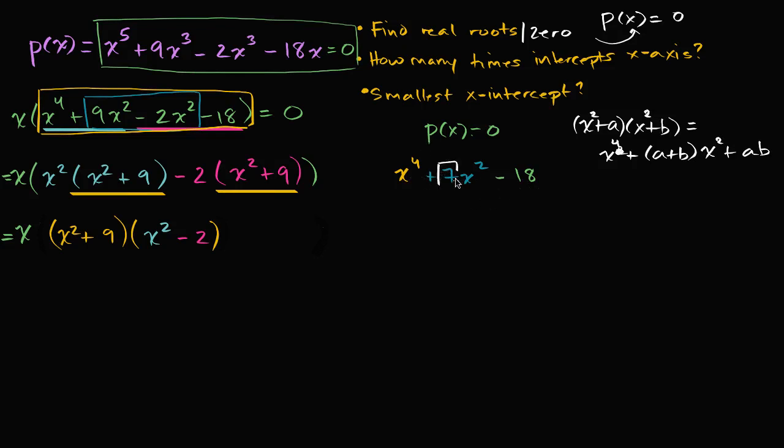So what two a's and b's, that if I add them up, I get seven, and if I take their product, I get negative 18? Since their product is negative, we know they are of different signs. One positive, one negative. And since their sum is positive, the larger of the two numbers is going to be positive.